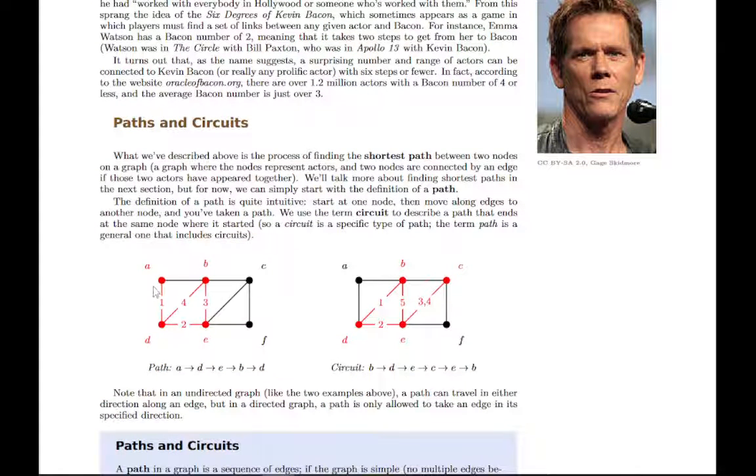So say for instance we start at A, and you just start traveling along edges as you choose. So one path would be if I went down to D and then over to E, up to B, and back down to D. So that would be one path.